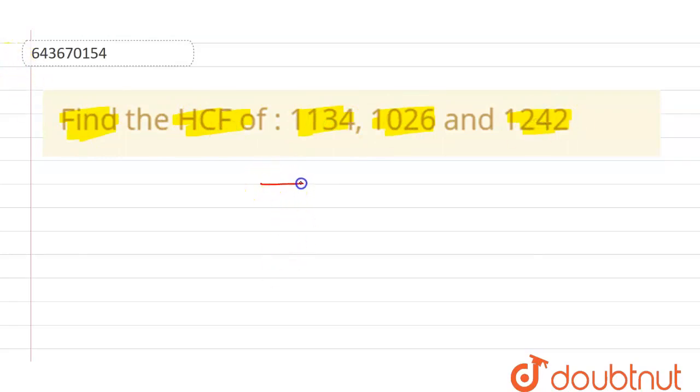Now we can start. We will take two numbers at a time and divide them. So 1134 and 1026 we are taking first. So it goes into one, 1026, so we will remain with 108. Here we will get zero and here we will get one. So we can check it out: eight and six, 108.